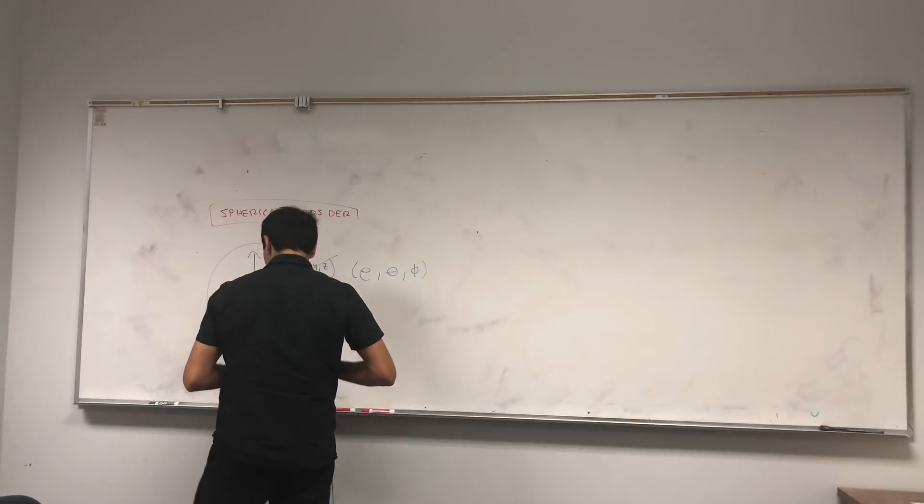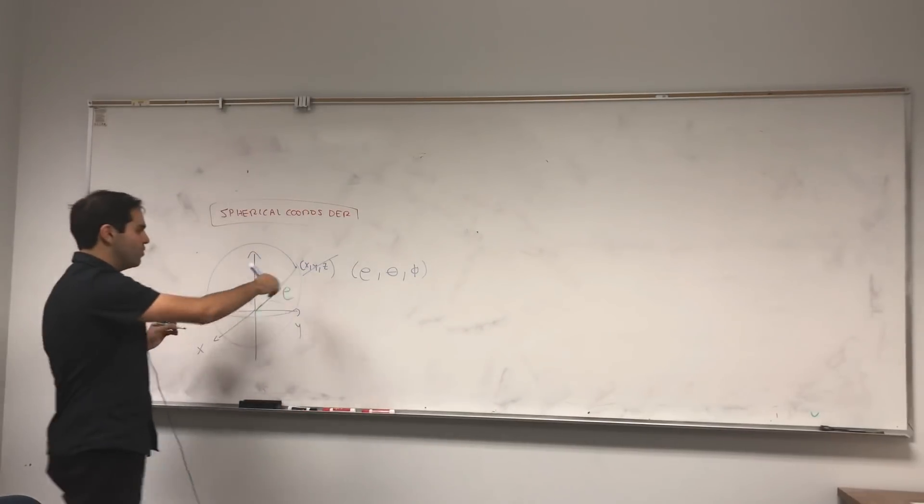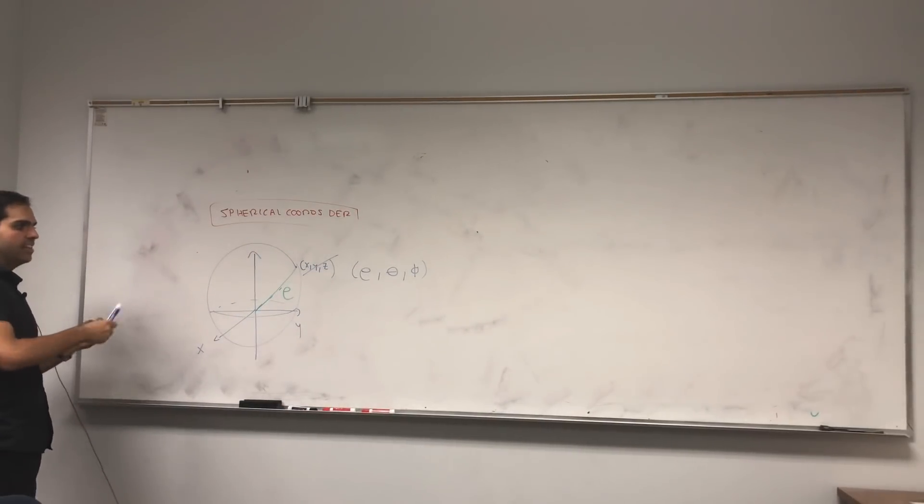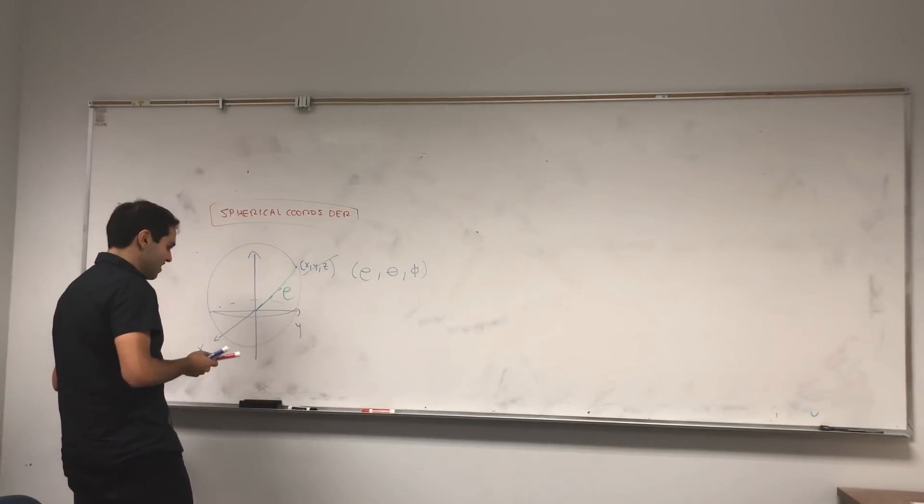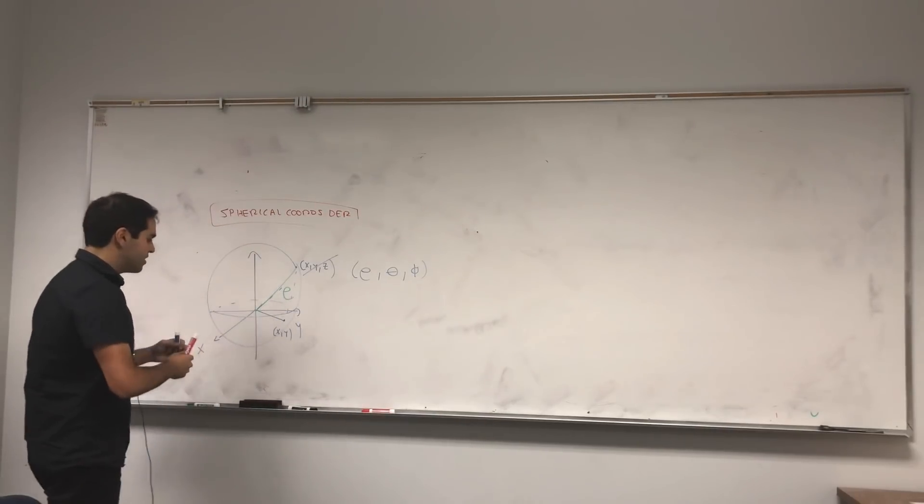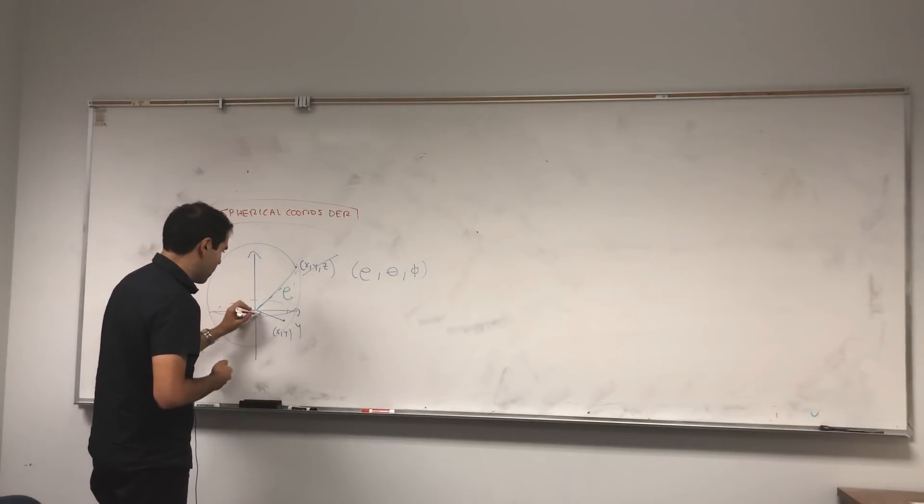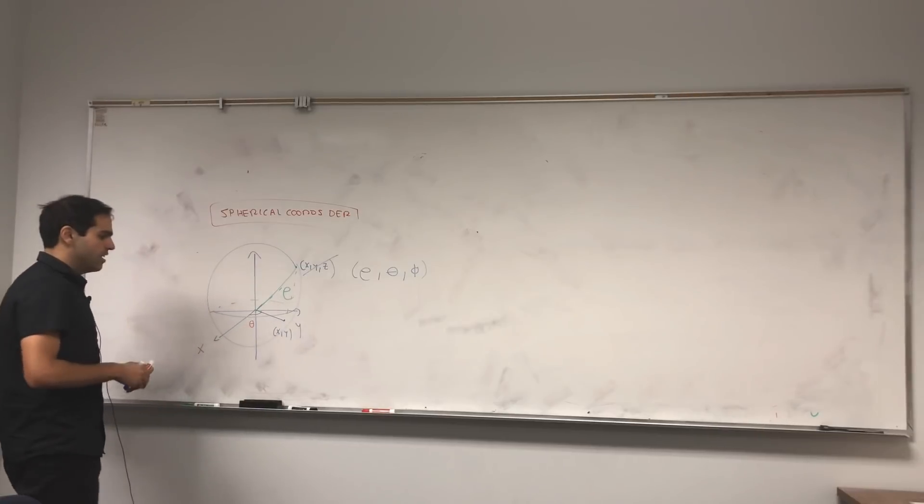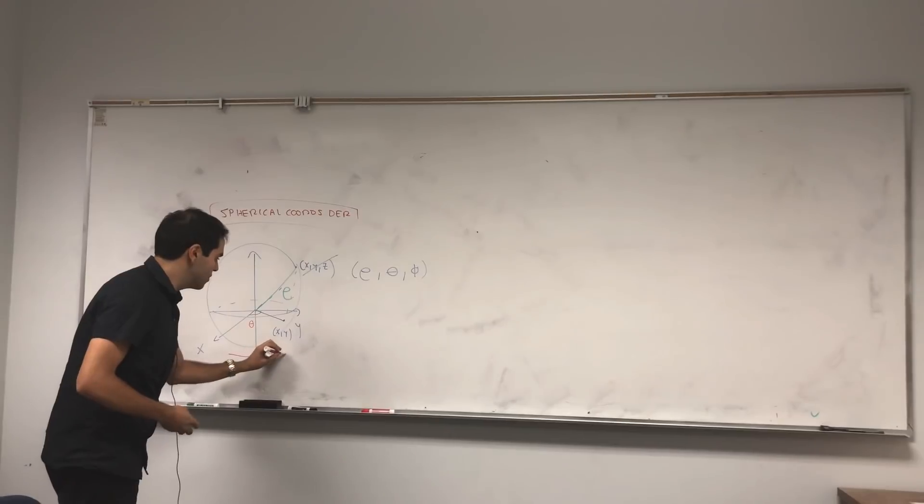And then theta, what it is, it's basically, if you have the point x, y here, it's the angle between the x-axis and the point x, y. So this is theta. And I like to think of it in terms of horizontal, because it goes this way.